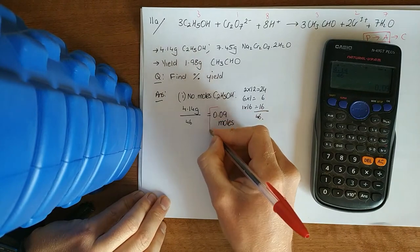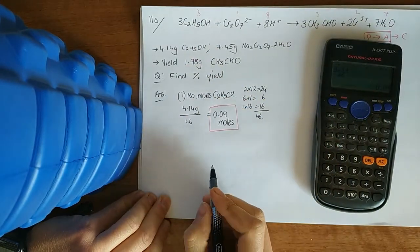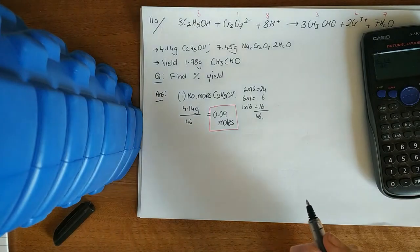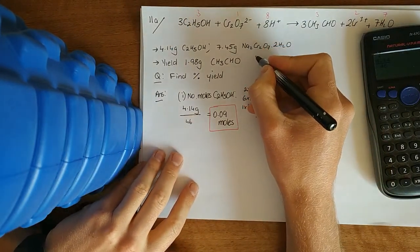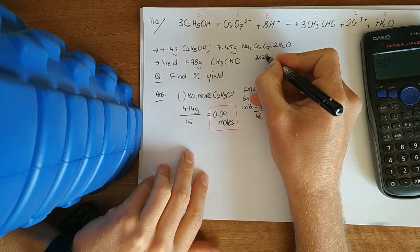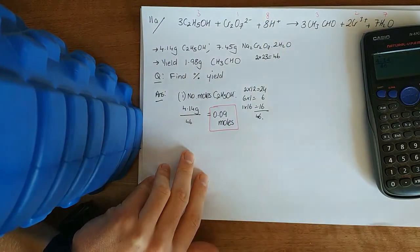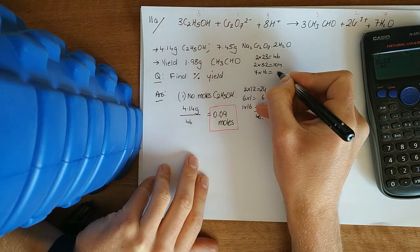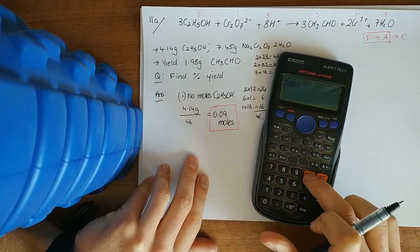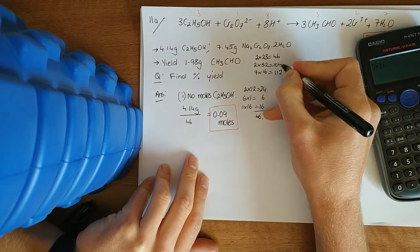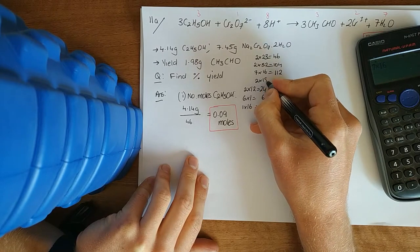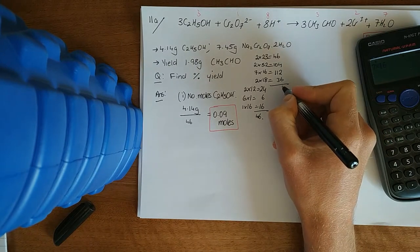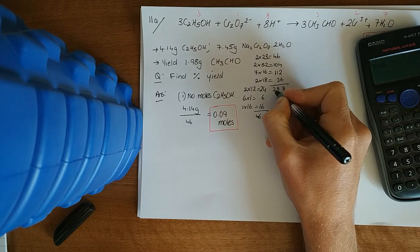Don't go plugging that in straight away. Remember, you've got to see which one is the limited. Here, you've got 7.45 grams of this. Na2Cr2O7. So, you've got to get the relative molecular mass of this. So, it's 2 sodiums, 2 times 23. Do it up here. Save a wee bit of space. 2 chromiums. 52. 7 oxygens. And then, 2 waters. Water as a mass, 18. You add all those up. You get 298.